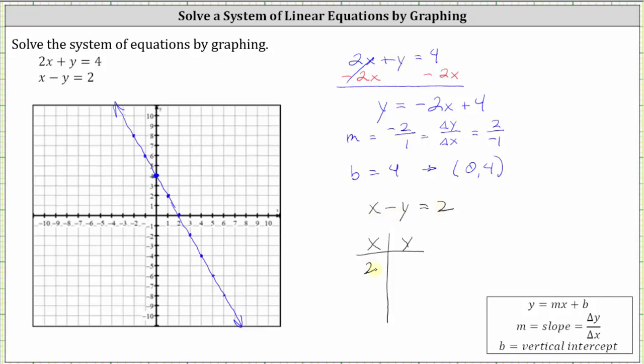For example, if x is 2, y would be 0, since 2 - 0 is 2. If x is 3, since 3 - 1 is 2, y is 1. If x is 4, y would have to be 2, since 4 - 2 is 2. When x is 5, since 5 - 3 is 2, y has to be 3.